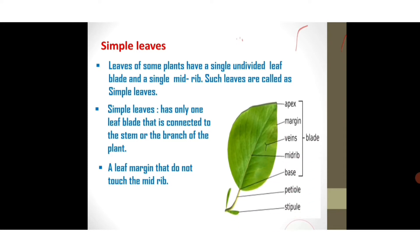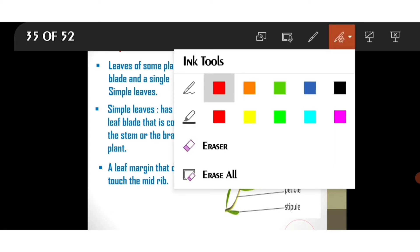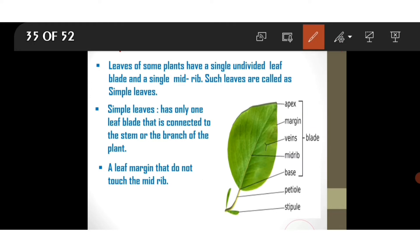The next point: a leaf margin that does not touch the midrib. Now observe the image of a simple leaf. The center part of a leaf is called the midrib. The leaf has an undivided leaf blade — the lamina is undivided.